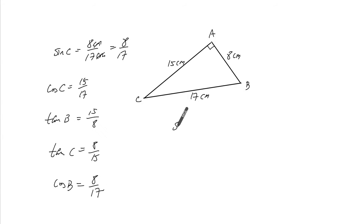And lastly, sine of B. From here, opposite over hypotenuse, so 15 over 17.